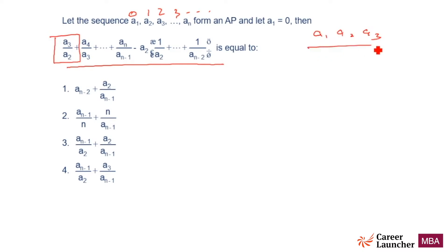So if I have got only three terms, if N is equal to 3 then the answer will be A3 by A2 and what is A3? A3 is 2 and A2 is 1. So this is what I am looking for.